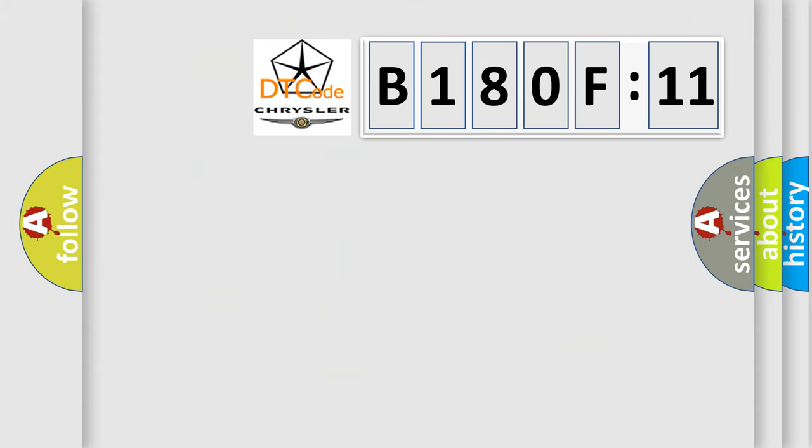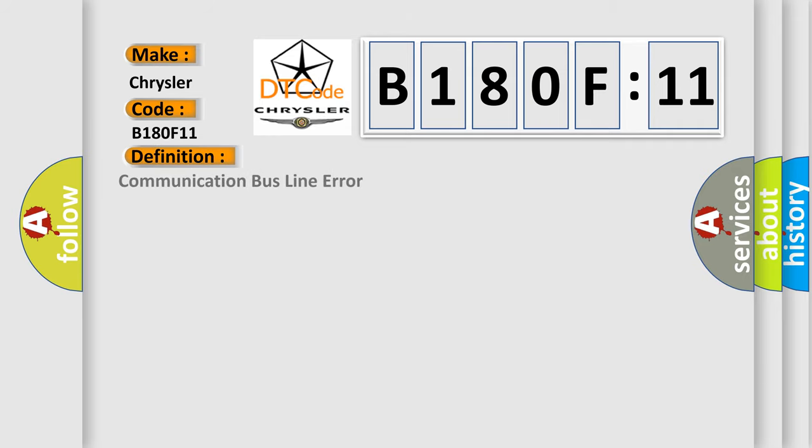And now this is a short description of this DTC code. Clear the DTC, cycle the ignition switch, repeat the self-test. If the DTC is retrieved again, install a new ABS module. Repeat the self-test circuit.